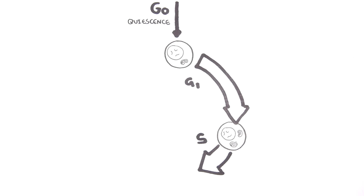The S phase is when the DNA duplicates. After the S phase there is a G2 phase, where the cell essentially grows again and prepares itself for the M phase. The M phase is also known as mitosis, where the cell divides into two identical daughter cells. These new cells can then re-enter the cell cycle or go back to the G0 phase.